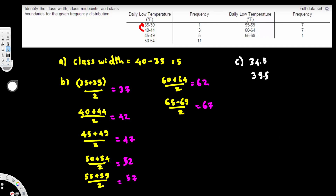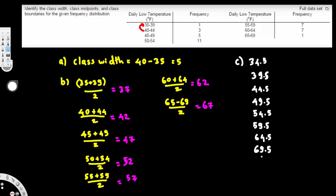So the class boundaries are: 34.5, 39.5, 44.5, 49.5, then continuing to 59.5, 64.5, and the last one — a common mistake — we have to add 0.5 to get 69.5. So the class boundaries go from 34.5 all the way up to 69.5. I hope you guys find this video helpful, see you next time.